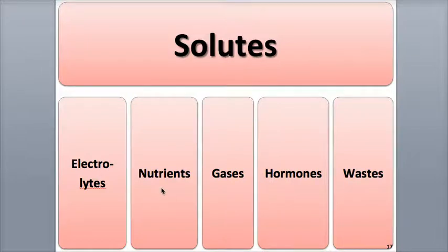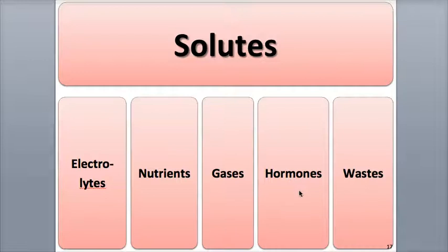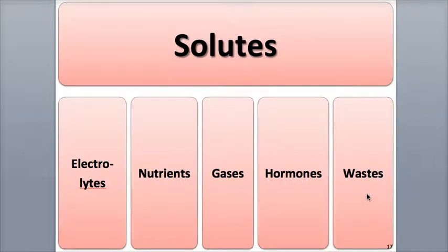Other plasma solutes include nutrients from digestion like glucose, amino acids, and fatty acids; respiratory gases like oxygen, carbon dioxide, and nitrogen gas; regulatory substances like enzymes, hormones, and vitamins; and a variety of wastes, most of which are from protein digestion, including urea, uric acid, creatine, bilirubin, and ammonia.